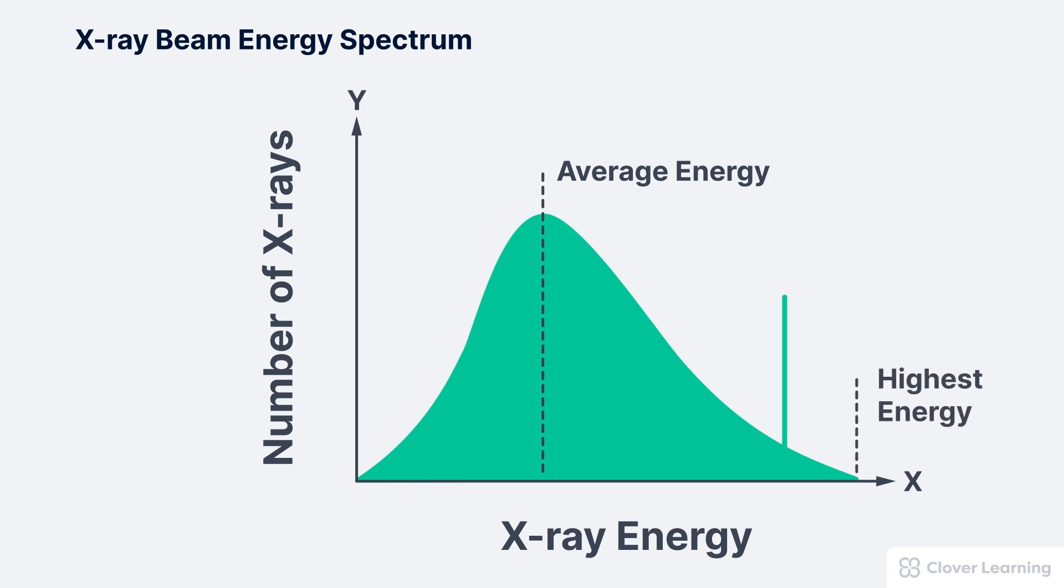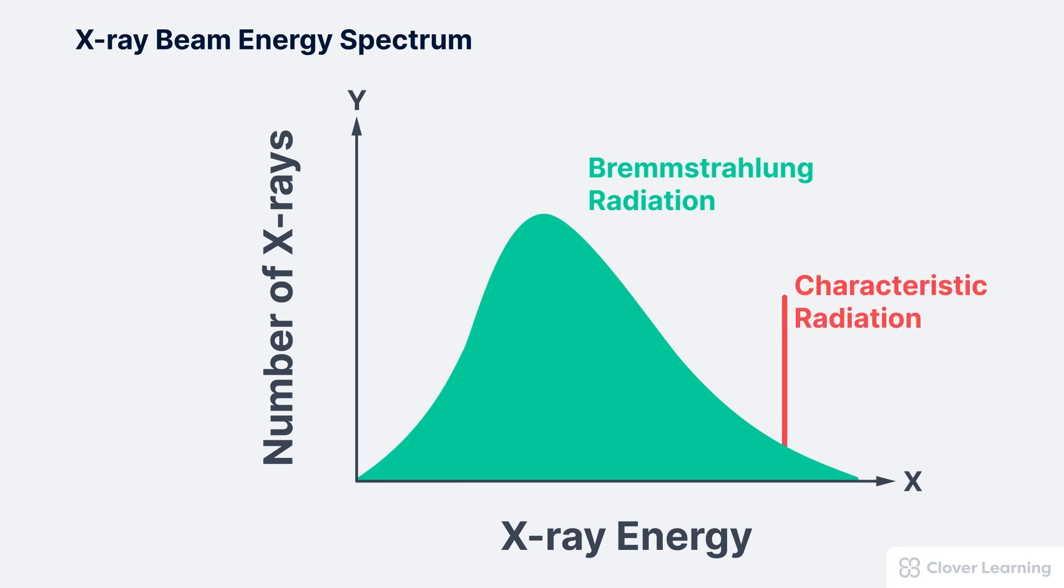The point of the curve that's farthest to the right represents the highest energy photons. There aren't very many really high energy photons, which is why the curve is so short there. So where did all of these photons come from? The large bell shape comes from a type of x-ray production that we call bremsstrahlung radiation.